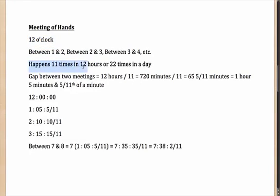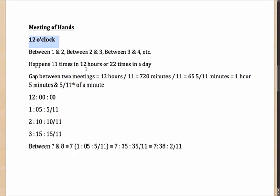So it essentially happens 11 times in 12 hours, or 22 times in a day. You might ask: why not 12 times in 12 hours? Because between 11 and 12 and between 12 and 1, the meeting at 12 o'clock takes care of both those hour gaps. This one particular meeting covers two hour gaps. In all other hour gaps it happens exactly once. That is why it is 11 meetings in 12 hours.